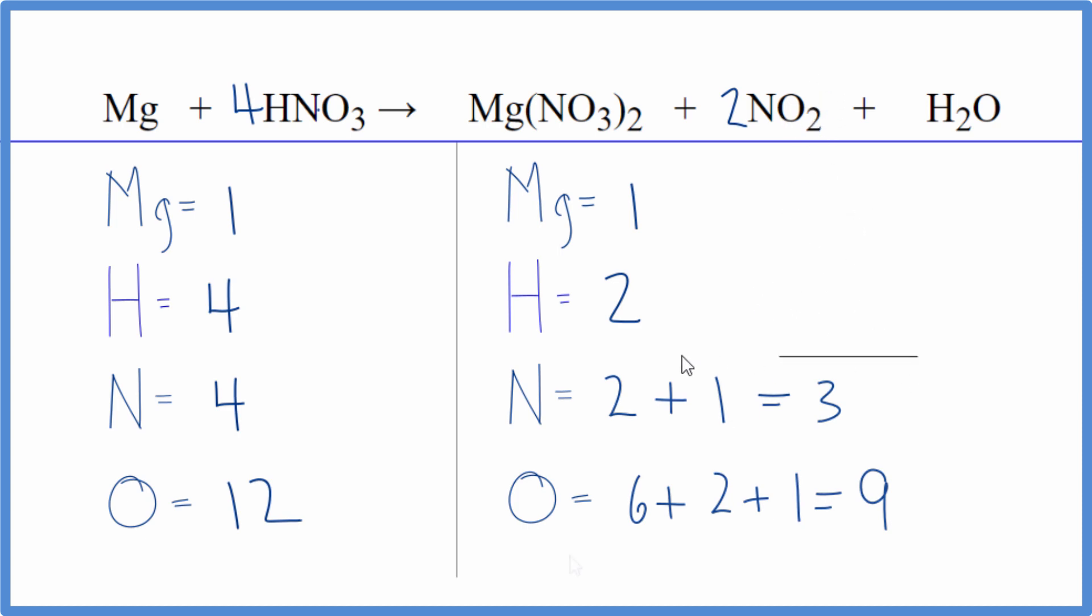So now I have two times one is two, plus one times two is two. So the nitrogens, we have four, they're balanced. Oxygens: two times three is six, plus two times two is four, plus one, 11 oxygen atoms.